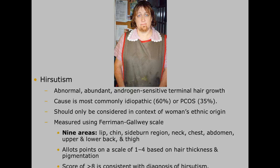Hirsutism is an abnormal, abundant, androgen-sensitive, terminal hair growth. It is usually idiopathic in 60% of people, meaning we don't know why it happens, or associated with polycystic ovarian syndrome in 35% of patients. The woman's ethnic origin is also considered, as some nationalities tend to have more hair. The Ferriman-Gallwey scale is used by physicians — not the laboratory. Nine areas are evaluated: the lip, chin, sideburn region, neck, chest, abdomen, upper and lower back, and thigh. Each is scored one to four based on hair thickness and pigmentation. A score greater than eight is a diagnosis of hirsutism.